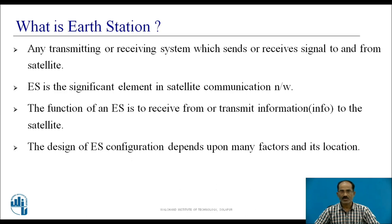The design of an Earth Station configuration depends upon many factors and its location. The various design factors include transmitting power, receiving power, size of the antenna, noise-to-temperature ratio, and noise introduced in the network. The location of an Earth Station may be on the surface of the Earth, on a ship at sea, or it may be airborne.